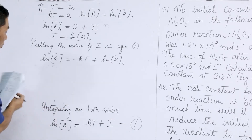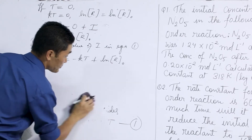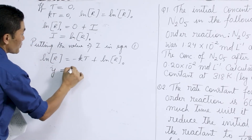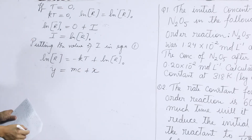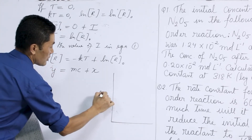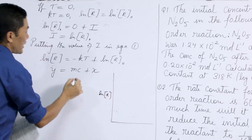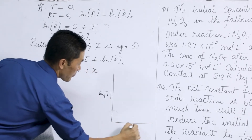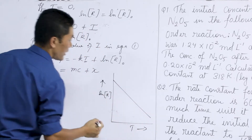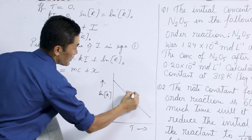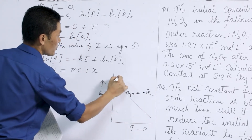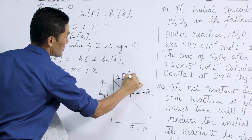Now this equation is similar to the equation of a straight line, which is y = mx + c. So if we plot log R against time, then we will get a straight line, and the slope of this line will be equal to minus k, and the intercept will be equal to log R₀.